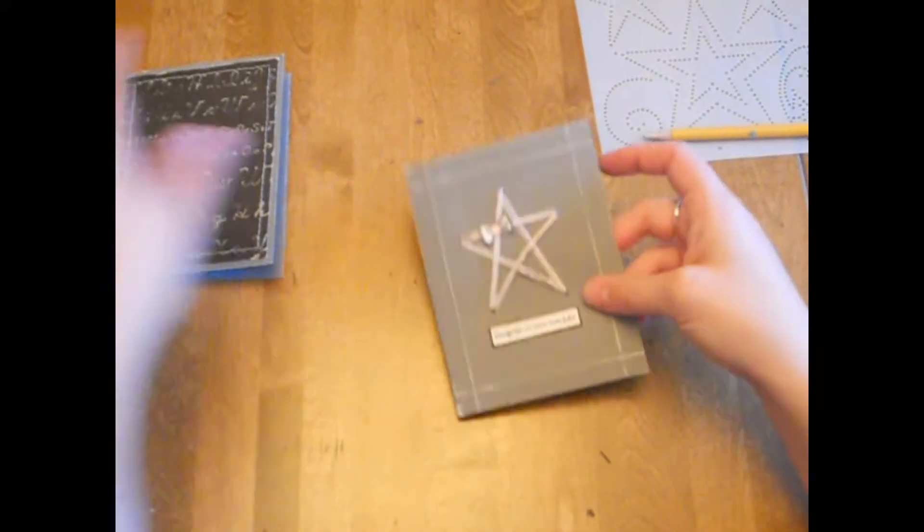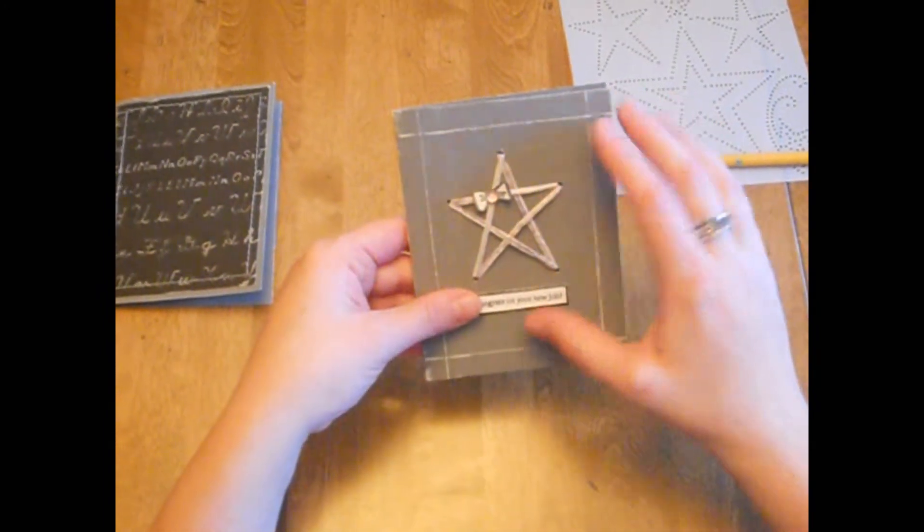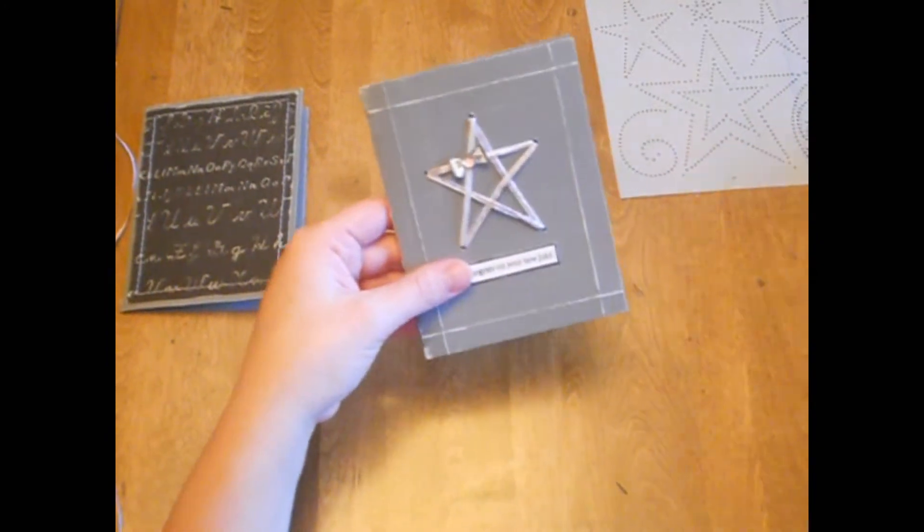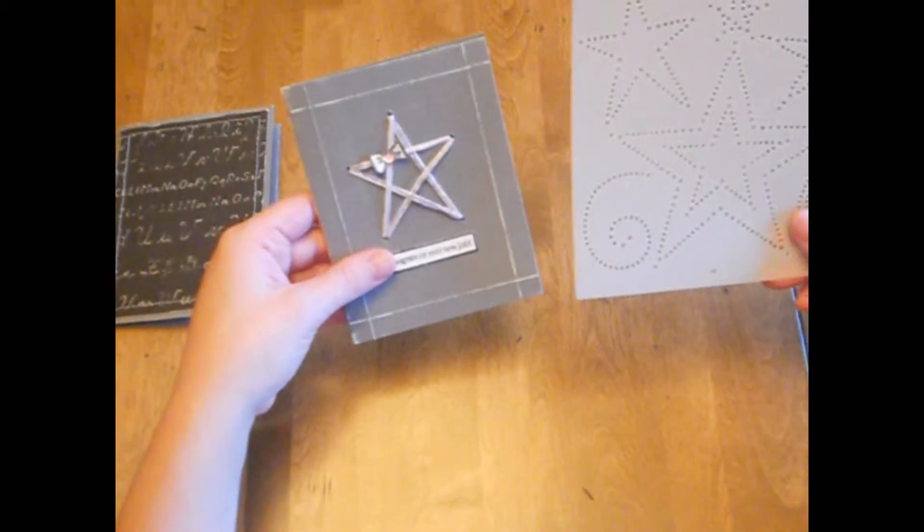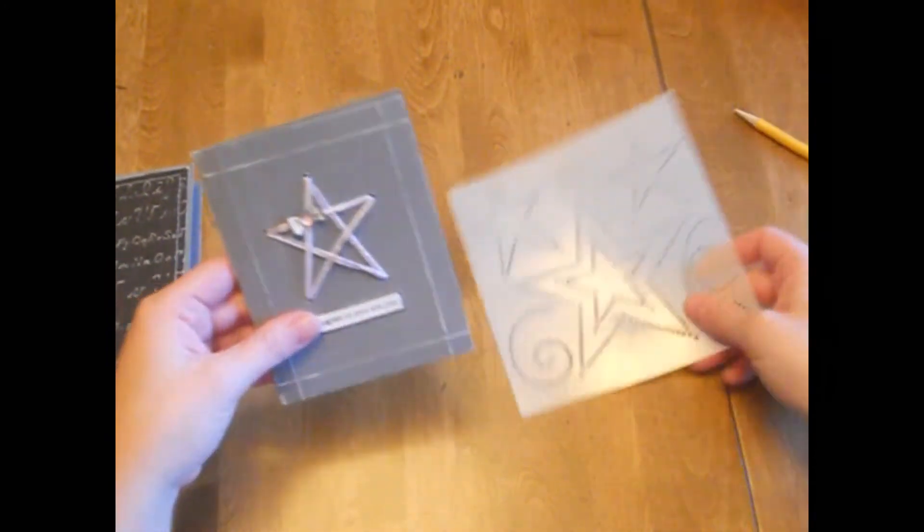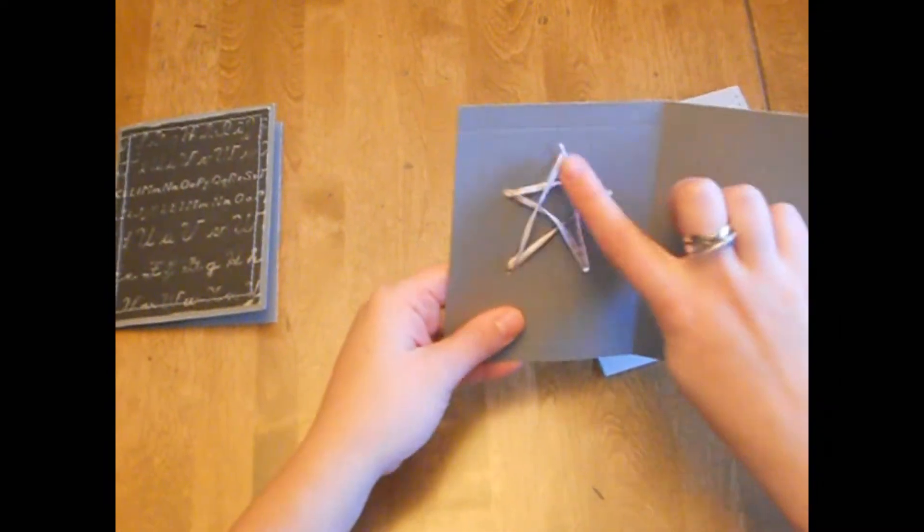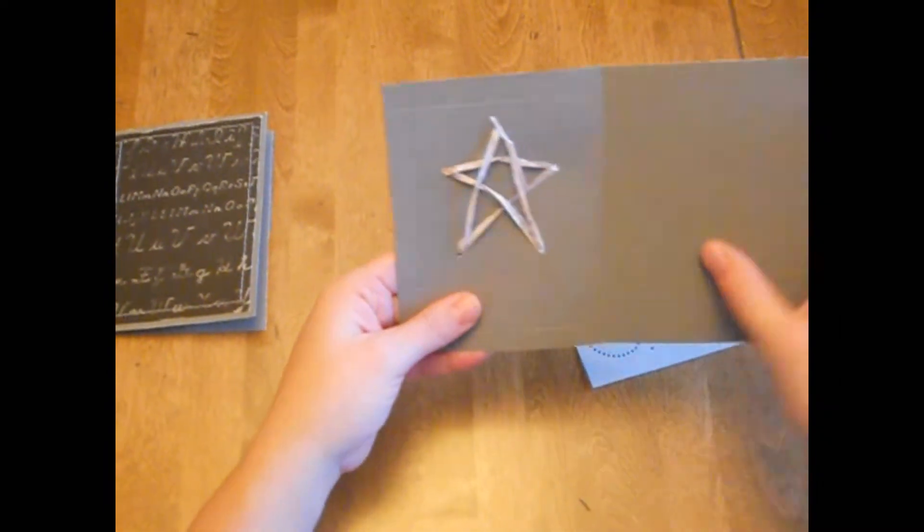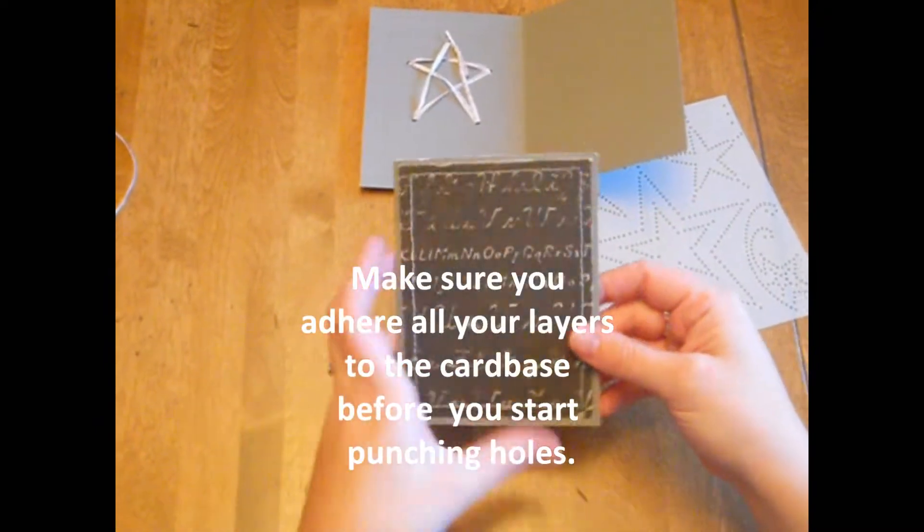So the first thing that I did is I'm using a standard A2 card and with a stencil similar to this, or you can even freehand it if you want. I turned the card over and on the inside I copied the stencil there. So that's the first thing I'm going to do with a standard card base.